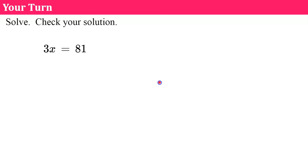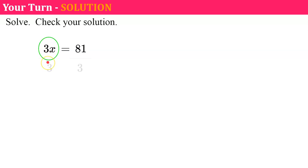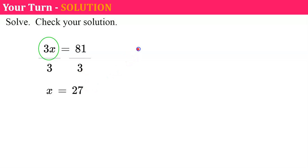Your turn again — solve, check, and come back. Welcome back. I have 3 multiplied by x. The inverse of multiply by 3 is to divide both sides by 3. 3x divided by 3 is x, and 81 divided by 3 is 27. Let's check: replacing x with 27, 3 multiplied by 27 is 81. It checks.